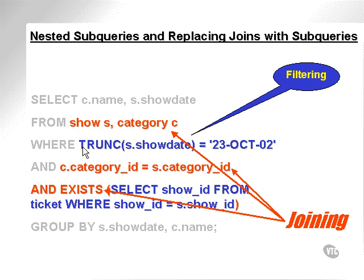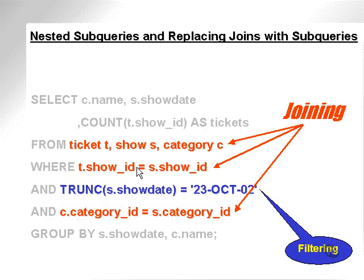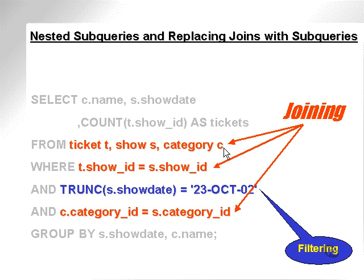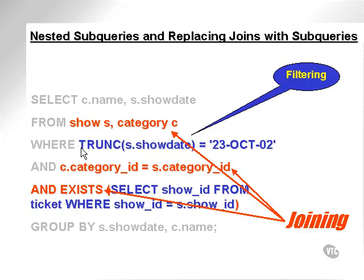Back to the filtering — the filtering is now on the first line. So when we join between the show and the ticket table, we'd actually be joining fewer rows because we'd have fewer show records. Aside from filtering, look at the difference between joining three tables in this query versus two tables in this query.